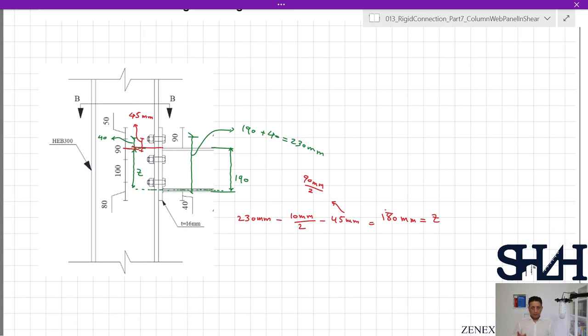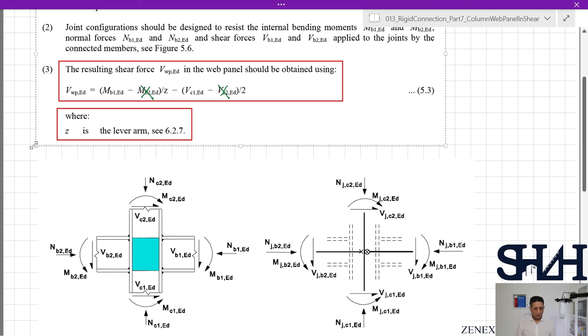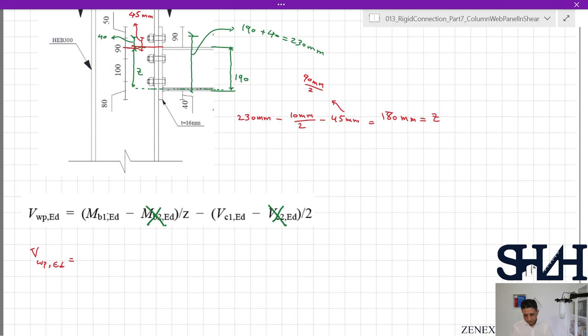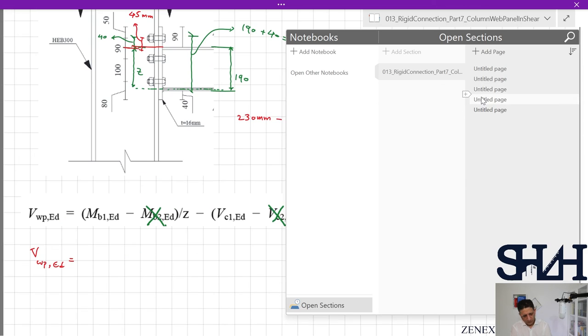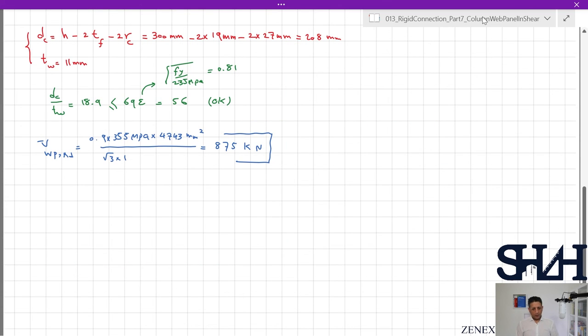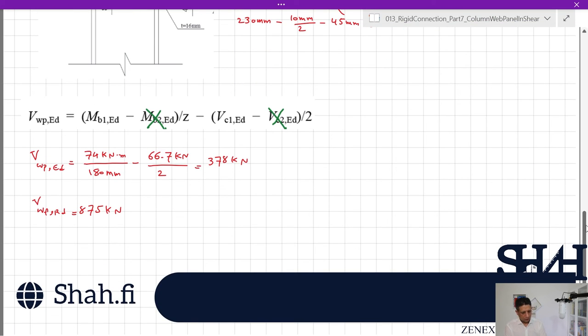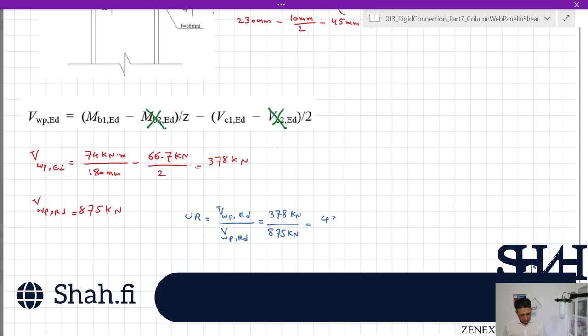Now we have Mb1, we have z, and we have VEd, so we can calculate vwp,Ed. Mb1,Ed is 74 kilonewton-meters divided by 180 millimeters minus 66.7 kilonewtons divided by 2, which equals 378 kilonewtons. Coming back to our capacity, vwp,Rd is 875. Now we can calculate the utilization ratio for this check: 43%.